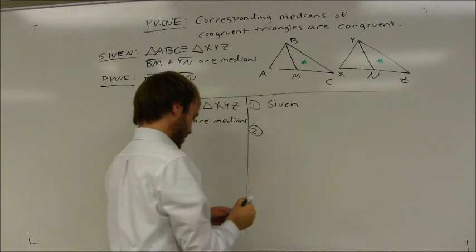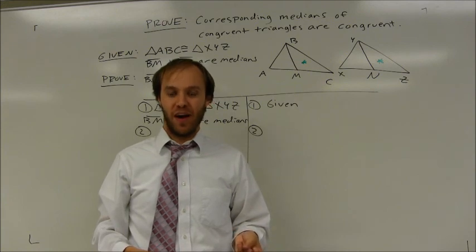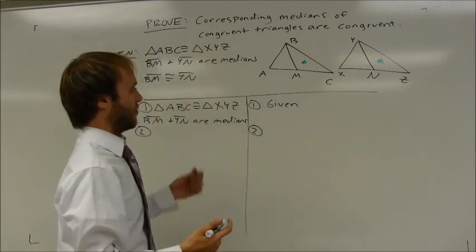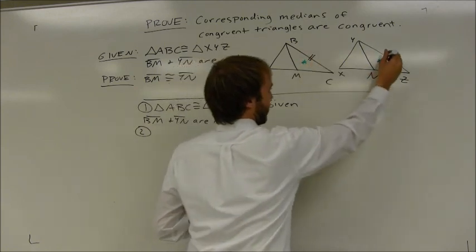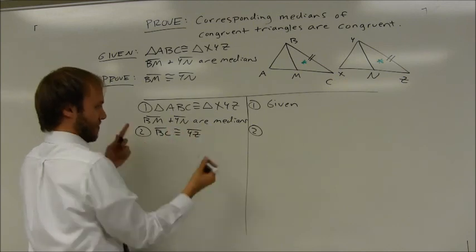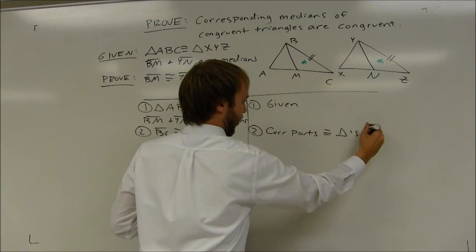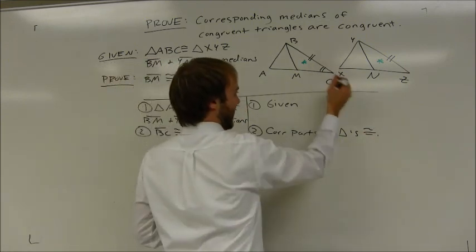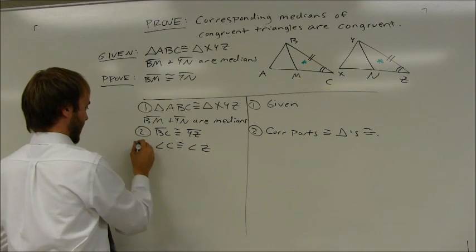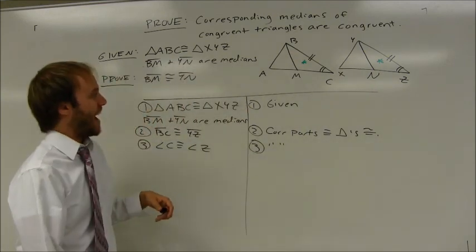So I'm going to prove this triangle congruent to this triangle. The key is I need three pairs of corresponding parts so I can use one of my theorems or postulates — either SSS, SAS, or ASA. The first thing: I know that these two sides are going to be congruent. BC is congruent to YZ, and that is because corresponding parts of congruent triangles are congruent. Additionally, I know that angle C is going to be congruent to angle Z, and I'll put that in for the same reason — corresponding parts of congruent triangles are congruent.